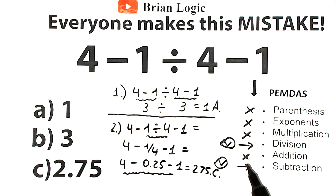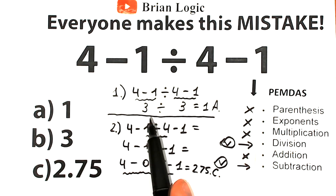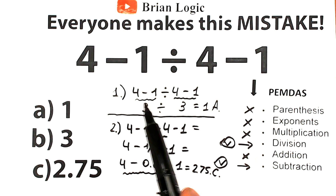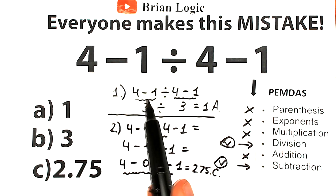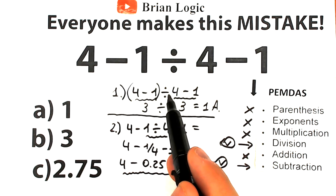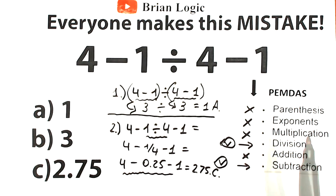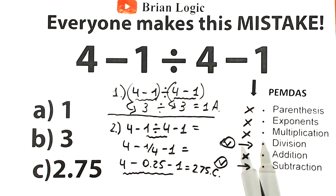A lot of students are confused between these two interpretations — some say A, some say C, and it turns into a big argument. The correct answer is option C. Option A is the worst mistake in terms of math, because subtraction is always the final step. However, if you put parentheses — (4 minus 1) divided by (4 minus 1) — then 3 divided by 3 equals 1, which is absolutely correct, but only with parentheses. Without parentheses, option A is wrong.